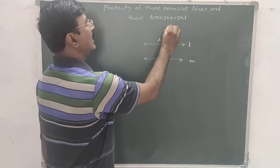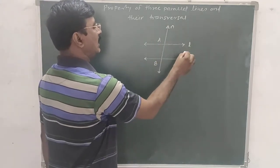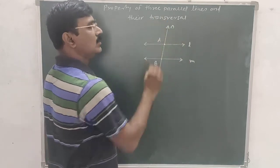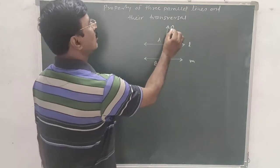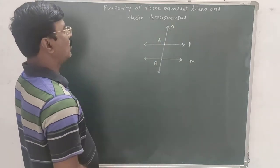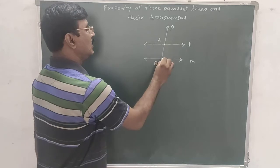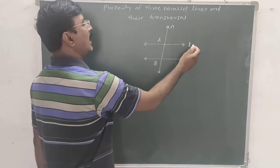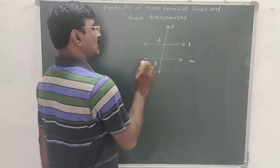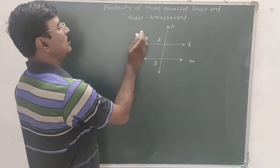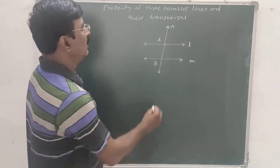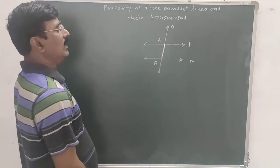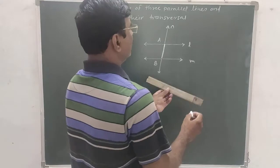Here, line N intersects lines L and M at points A and B, and therefore this line N is called a transversal. What is an intercept? This segment AB is called the intercept made by lines L and M on transversal N. Segment AB is called the intercept.